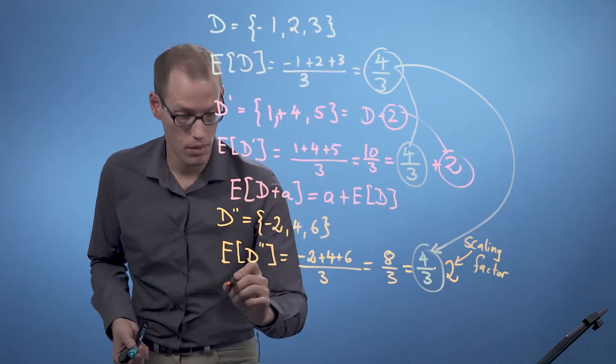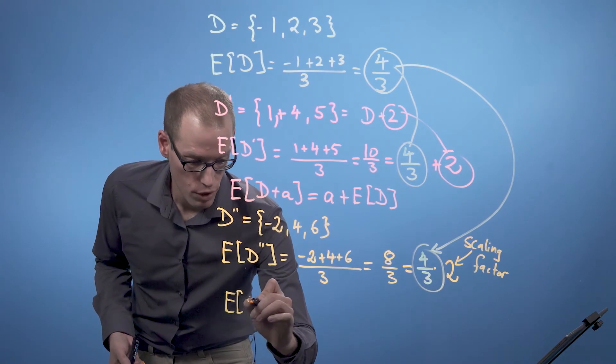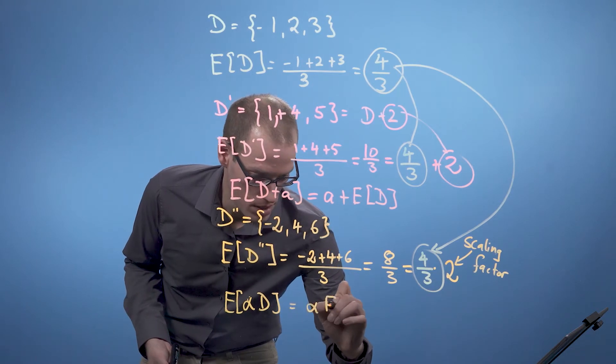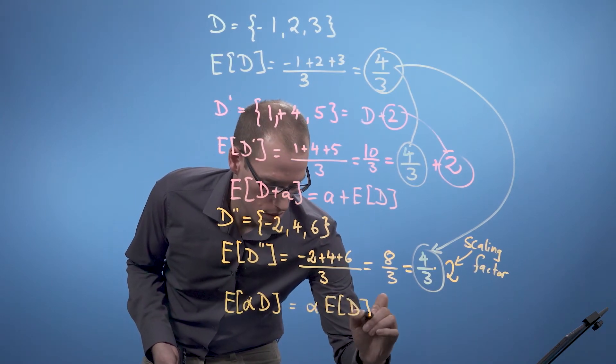In general we can write that the expected value of alpha times D is alpha times the expected value of D.